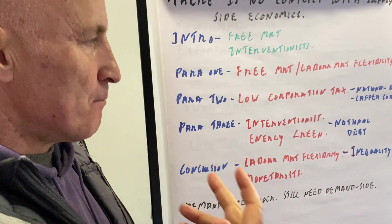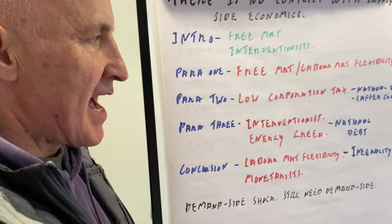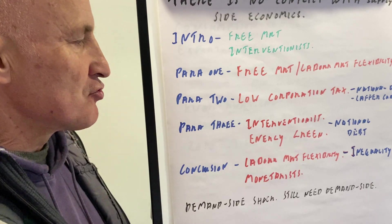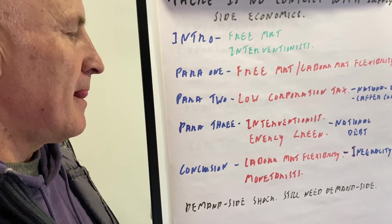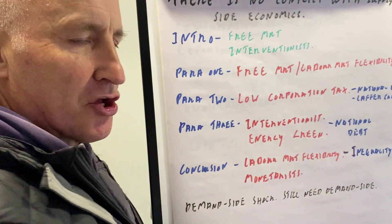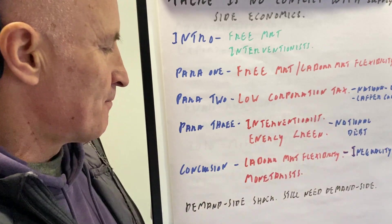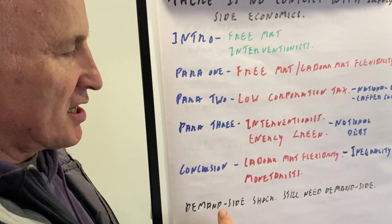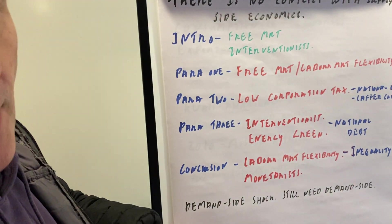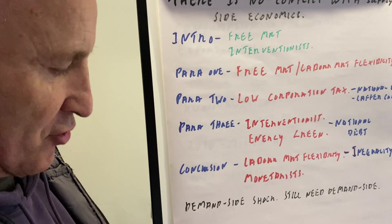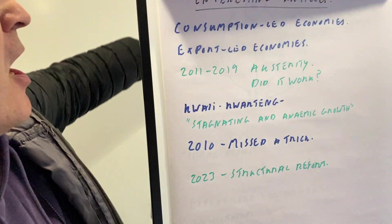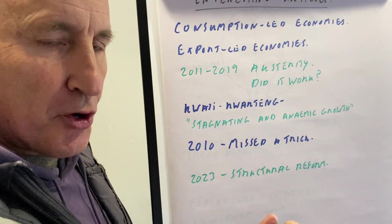Paragraph two: low corporation tax — standard theory — this may conform to the Laffer curve or may not, potentially increasing national debt but hopefully creating more growth. Paragraph three: interventionist — increasing government spending, for example on a green economy revolution, but national debt would increase. Conclusion: labour market flexibility may increase inequality; the monetarist argument is there's no conflict in the long term with supply-side economics, but what happens if there's a demand-side shock? We saw that in 2008–2009 and 2020.